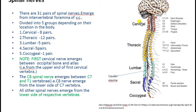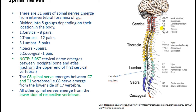Cervical spinal nerves are eight in number — eight pairs are present. The first cervical spinal nerve emerges out from between the occipital bone and the atlas, which is the first vertebra. The eighth cervical spinal nerve, C8, arises from below the seventh cervical vertebra. C1 to C7 come from the upper side of their respective vertebra, except C8.